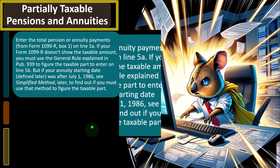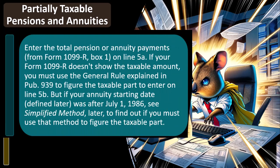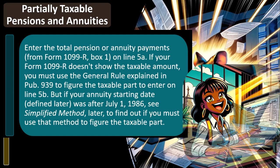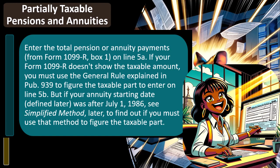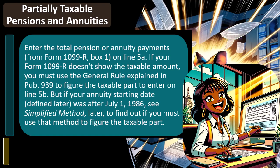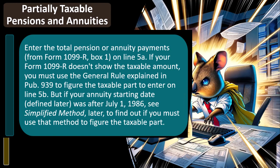Partially taxable pensions and annuities: enter the total pension or annuity payments from Form 1099-R Box 1 on line 5A. If your Form 1099-R doesn't show the taxable amount, use the general rule explained in Publication 939 to figure the taxable part to enter on line 5B. Hopefully the financial institution issuing the 1099 has already broken out the taxable and non-taxable amounts. If your annuity starting date was after July 1st, 1986, see the simplified method to determine if you must use that method to figure the taxable part.